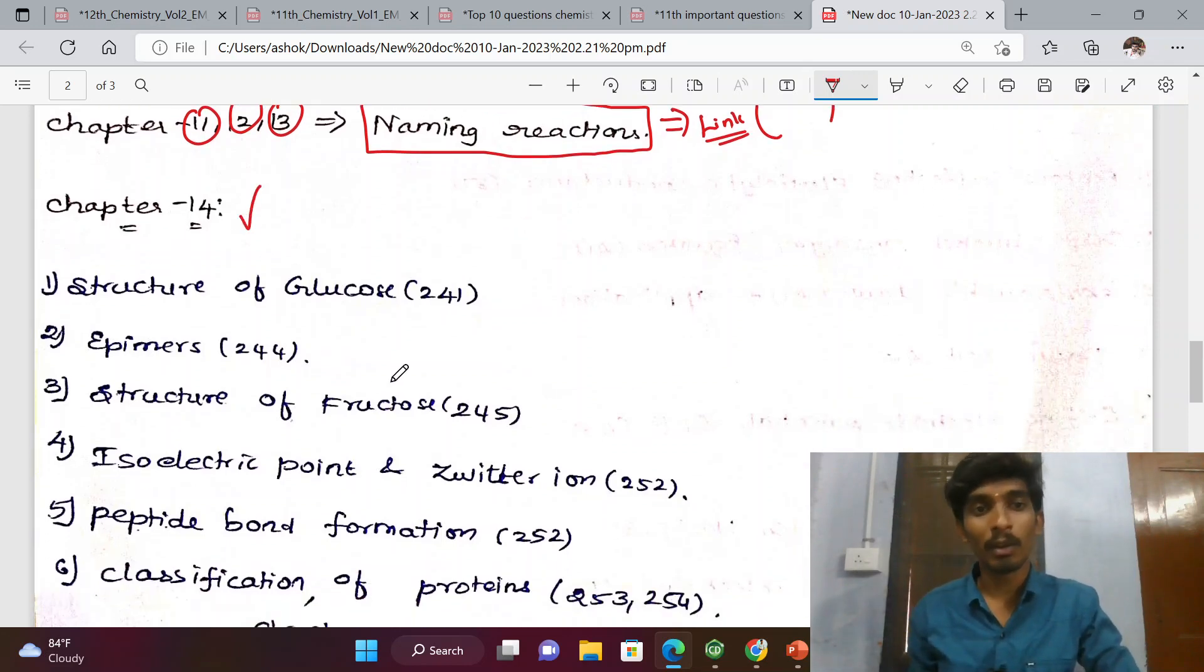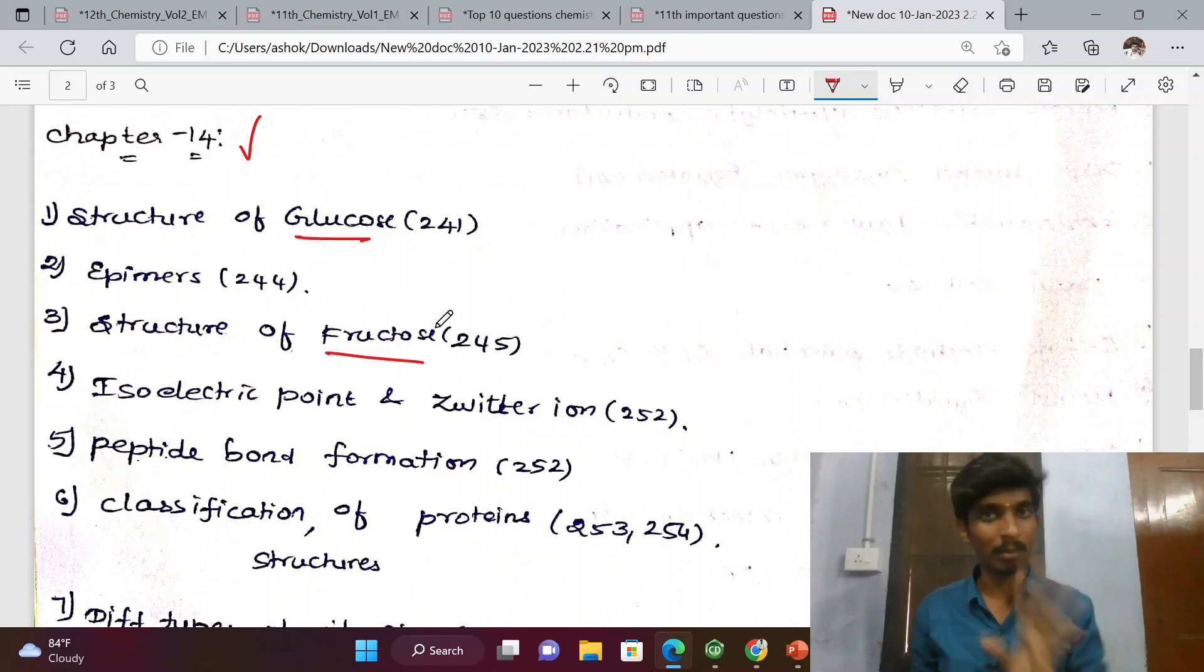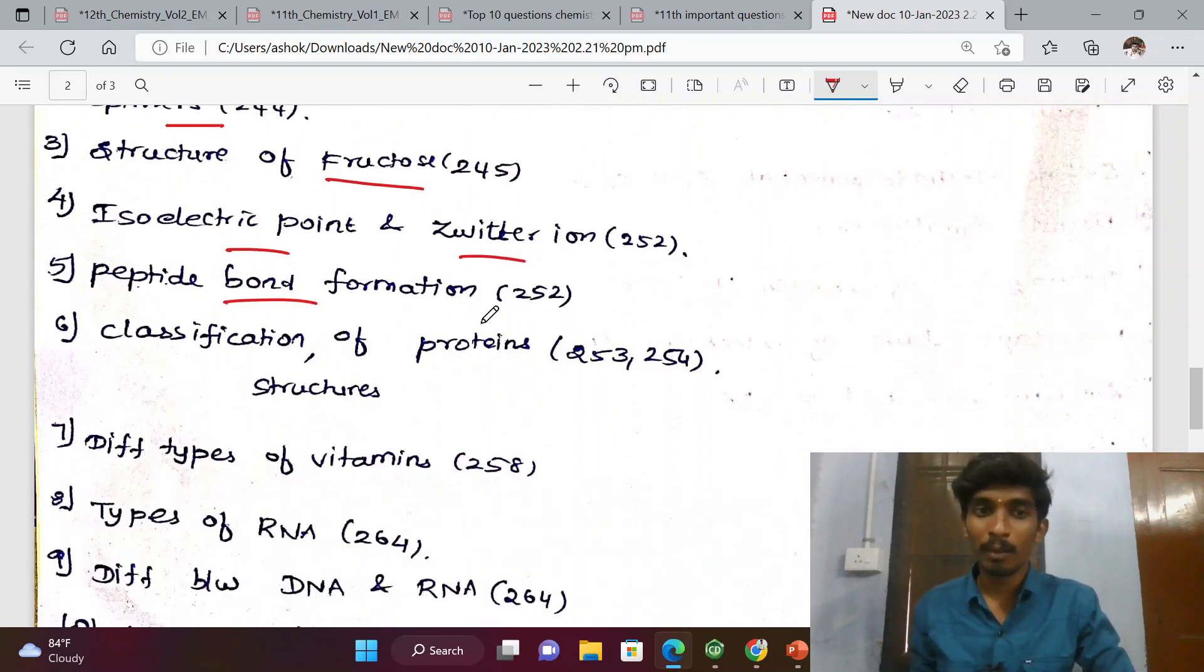Chapter 14, Biomolecules: Structure of glucose, structure of fructose, epimers (definition), isoelectric point, zwitterion (just definition), peptide bond formation (important, 3 mark question), classification of proteins and structures of protein - classification includes fibrous and globular; structure includes primary structure, secondary structure, and tertiary structure.